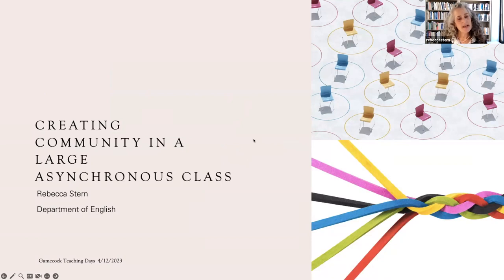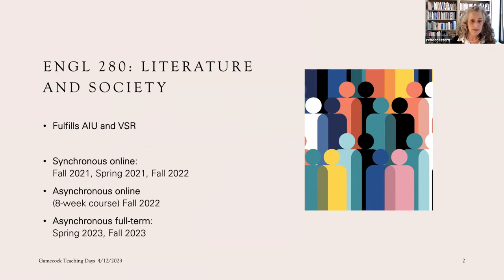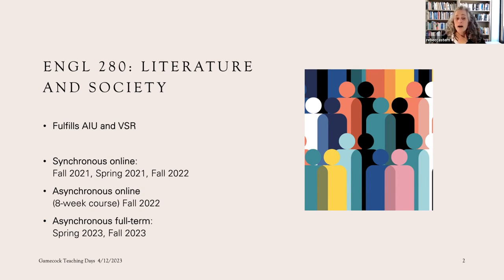I'm creating community in a large asynchronous class. English 280 is Literature and Society, and it fulfills two different components of the Carolina Core: AIU, which is the Aesthetic and Interpretive Understanding, and VSR, the Values and Social Responsibility. In terms of the history of this class, I have taught honors sections in person, but I have never taught a large lecture format of this class in person. I have taught it online as a smaller class, then as a synchronous and hybrid synchronous-asynchronous class in spring 21 and fall 22. In fall 22, for the first time, we ran a completely asynchronous version of this class.